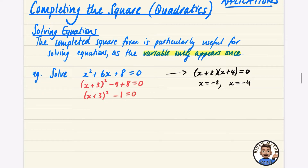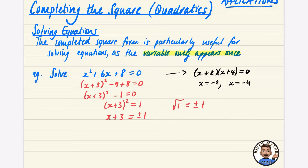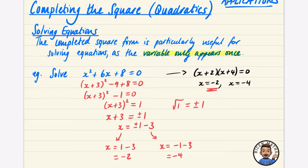Now we've written it in completed square form, we use traditional solving methods. Add 1 to both sides to get (x + 3)² = 1, then square root both sides. The left side gives x + 3, and the square root of 1 gives ±1. So x + 3 = ±1, meaning x = 1 − 3 = −2, or x = −1 − 3 = −4 — the same answers as factorizing.